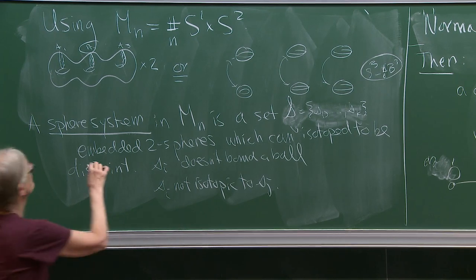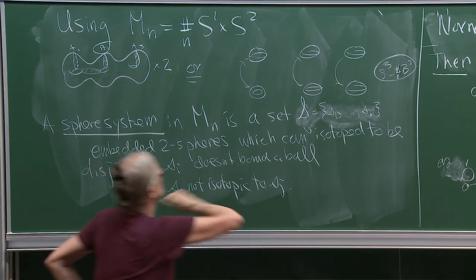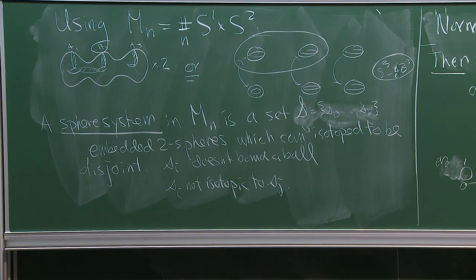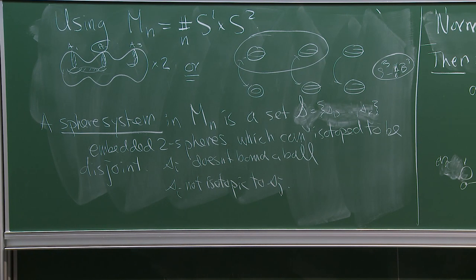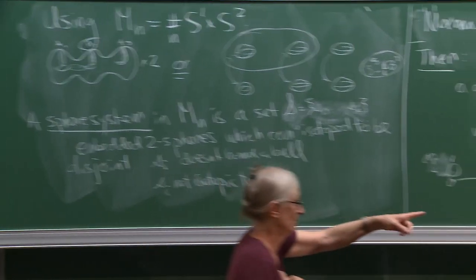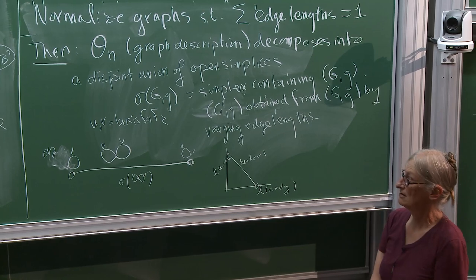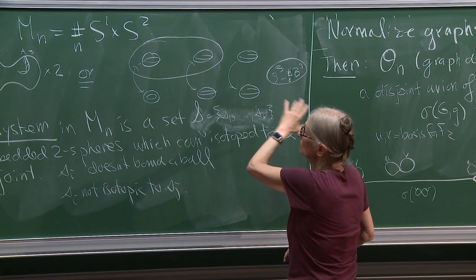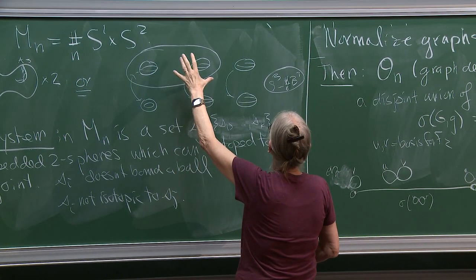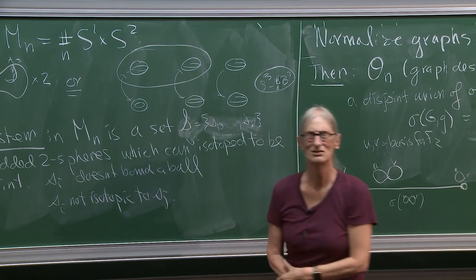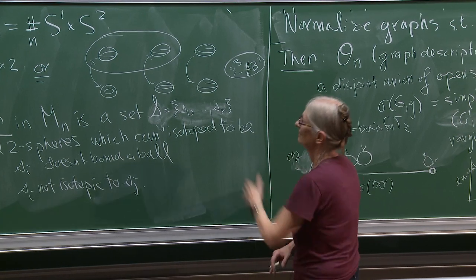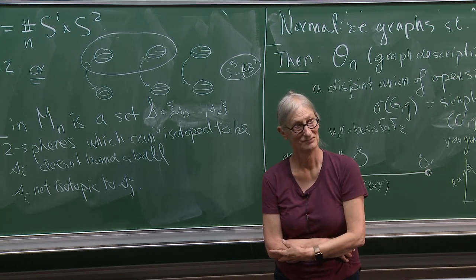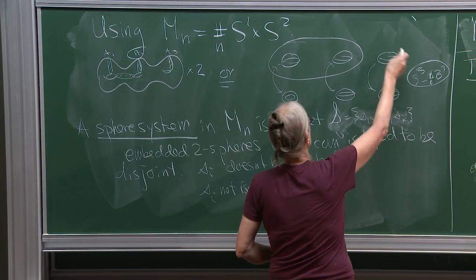If I add another sphere, I cut this three-ball into two pieces: one is a three-sphere minus three balls, or equivalently a three-ball minus two balls, and the other is a three-ball minus five balls. If I add more spheres, I cut it into more pieces, et cetera.